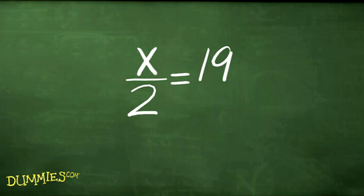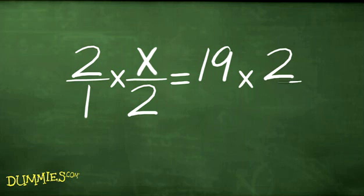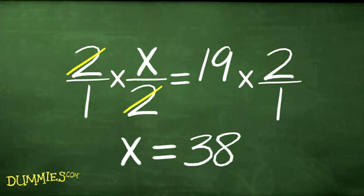Here's one more example. x over 2 is another way of saying 1 half times x. So we can solve this by multiplying by the reciprocal of 1 half, which is 2. Then, after we reduce and simplify, we see that x equals 38.